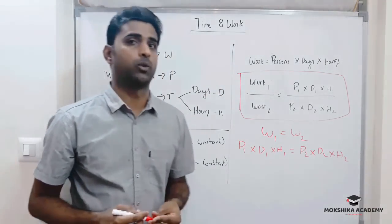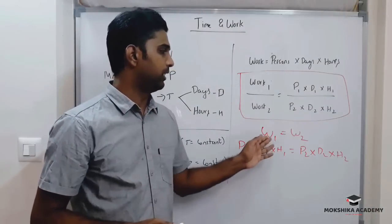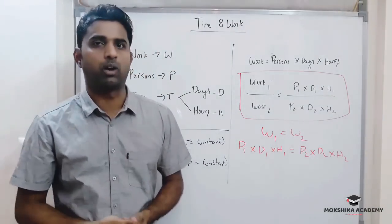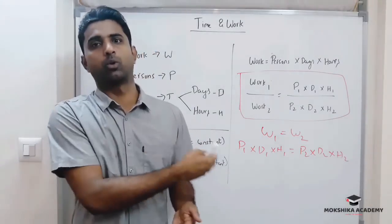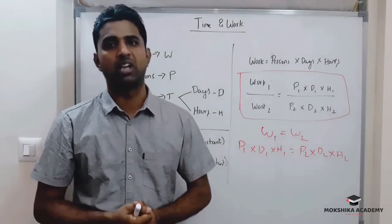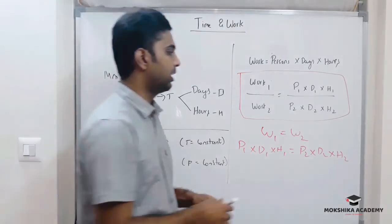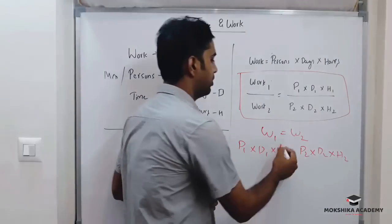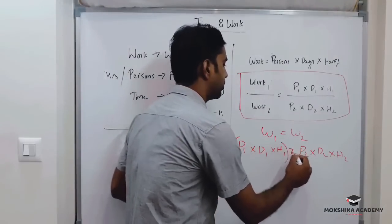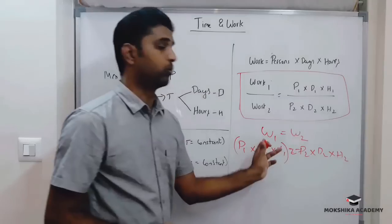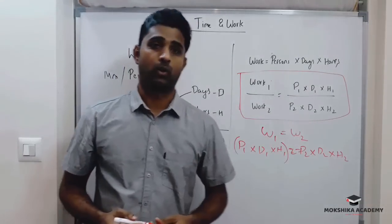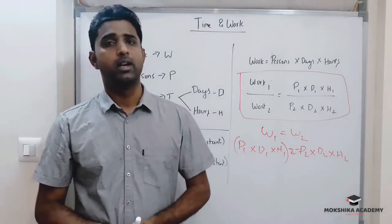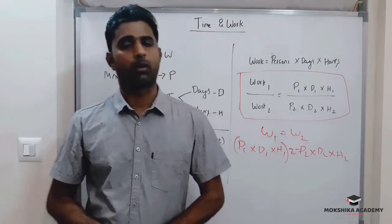Sometimes Work1 is twice Work2, so we multiply one side by two when setting up the comparison equation. Let us solve some problems.